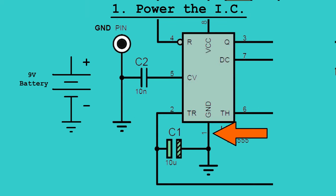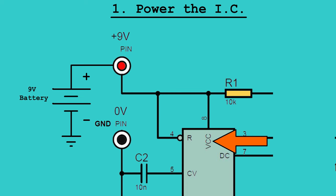Power the IC. Connect pin 1 (ground) to the negative terminal of the battery and pin 8 (VCC) to the positive terminal.